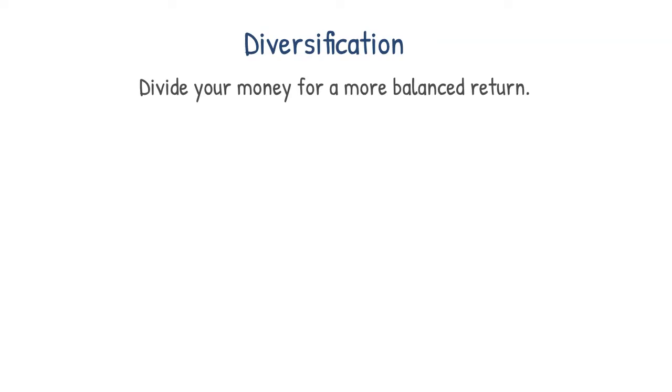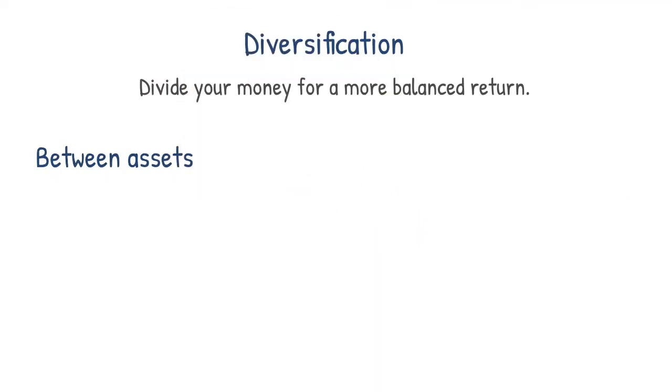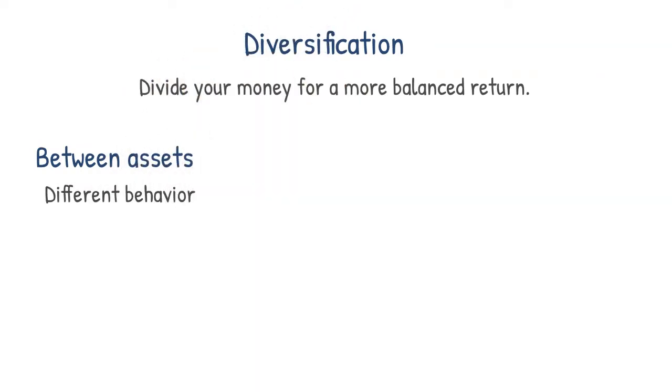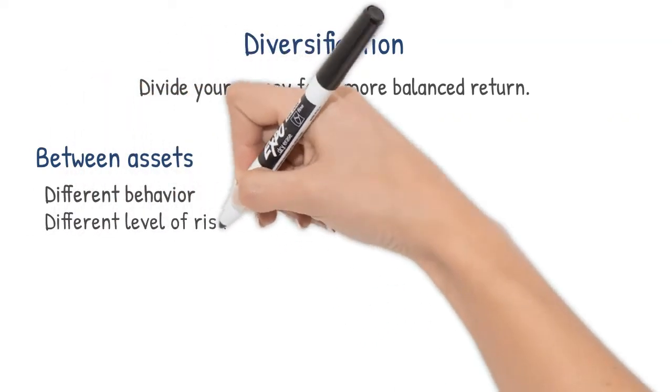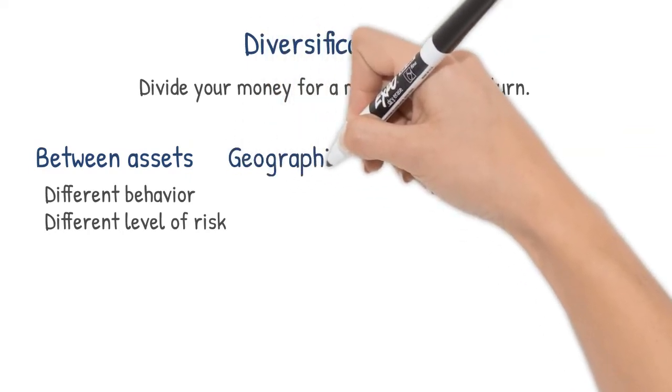For example, you can split your money between assets. In this case, you choose assets that respond to the same effect in completely different ways, such as the gold and equity pair. Or you choose a lower risk asset next to a riskier one. In this way, if the price of one asset falls, your total wealth will only feel it depending on the weighting.